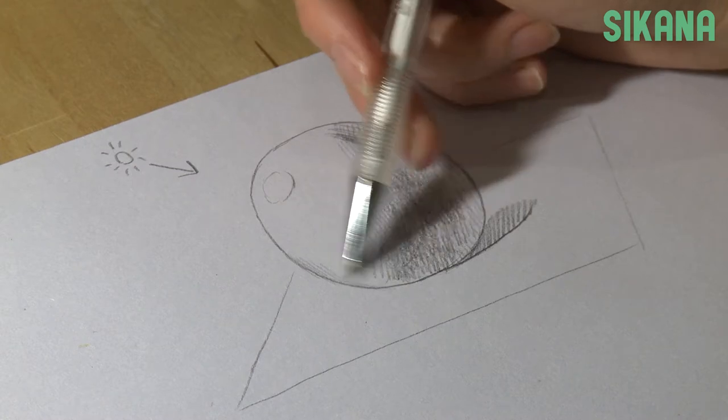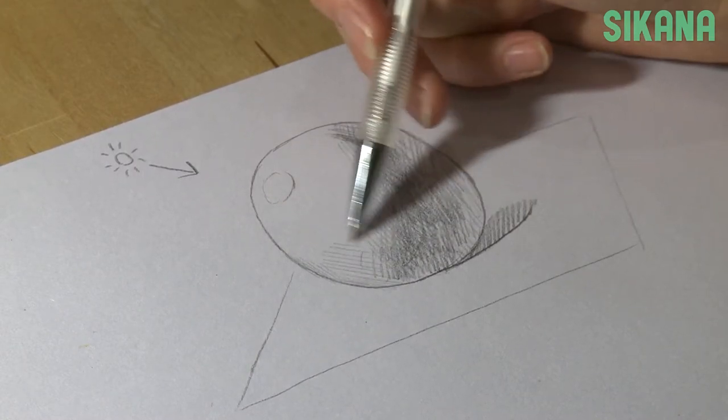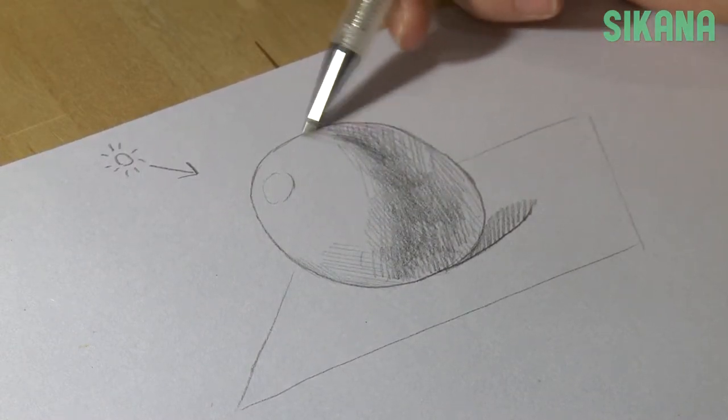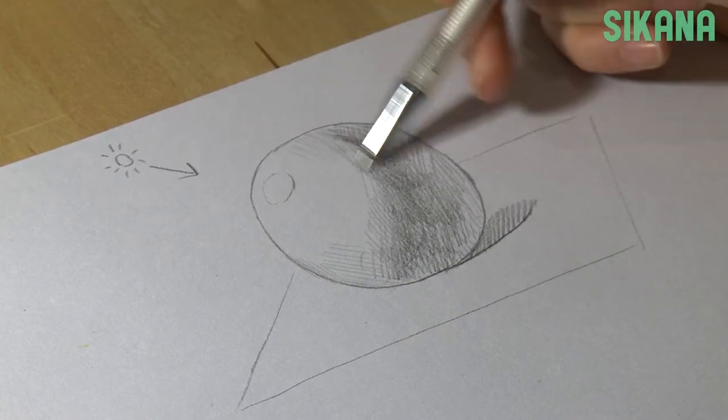It then progressively decreases as it approaches the reflection. Now, we're going to finish the different contrasts on the ball.